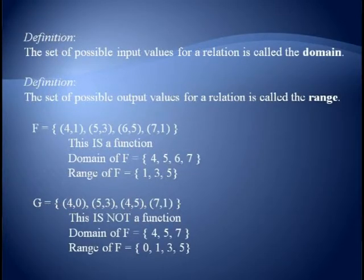A concept related to relations is the idea of domain and range. The domain is the set of possible input values, and the range is the set of possible output values. For a finite set of ordered pairs, this is fairly trivial. In the example shown here, f is a function and the possible input values are 4, 5, 6, and 7. So the domain of f would be the set containing these values. The range of f would be the possible output values, 1, 3, 5, and 1. Remember when we write things in a set, we don't bother to list duplicates. So the range is just a set containing 1, 3, and 5.